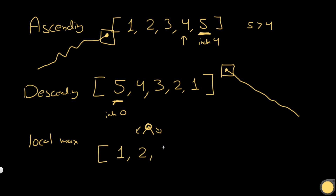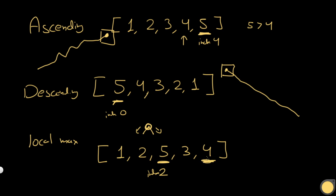Let's take the example: 1, 2, 5, 3, 4. In this case, we actually have two possible answers. The first is 5: its left neighbor is 2 and 5 is greater than 2, and its right neighbor is 3 and 5 is greater than 3 — so 5 is a valid peak at index 2. Another possible peak is 4 at index 4; its only neighbor is 3, and 4 is greater than 3. So these are the three conditions we have.